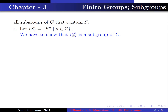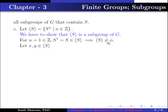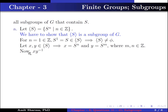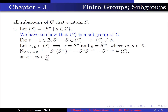We have to show that the set generated by S is a subgroup of G. For n = 1, which belongs to ℤ, s^n = s which is contained in the set generated by S. This implies the set generated by S is not empty. Let x, y belong to the set generated by S. This implies x = s^n and y = s^m, where m and n belong to ℤ. Now x · y^{-1} = s^n · (s^m)^{-1} = s^{n-m}, which belongs to the set generated by S since n − m belongs to ℤ.